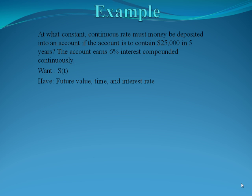Let's look at another example. At what constant continuous rate must money be deposited into an account if the account is to contain $25,000 in 5 years? The account earns 6% interest compounded continuously. So what we're trying to solve for is S of t, our income stream. What we have given in the problem is we're given future value, time, and interest rate.